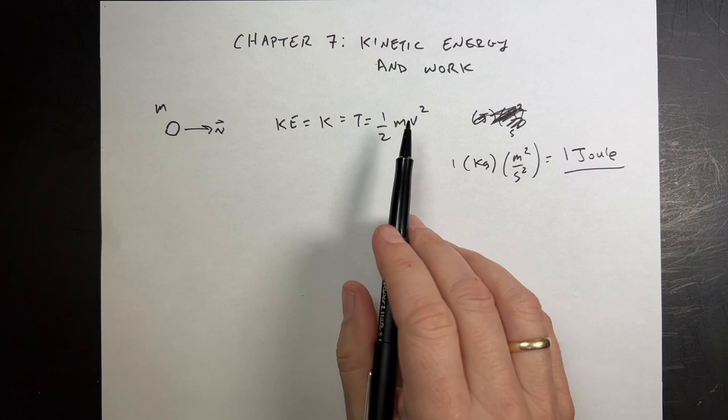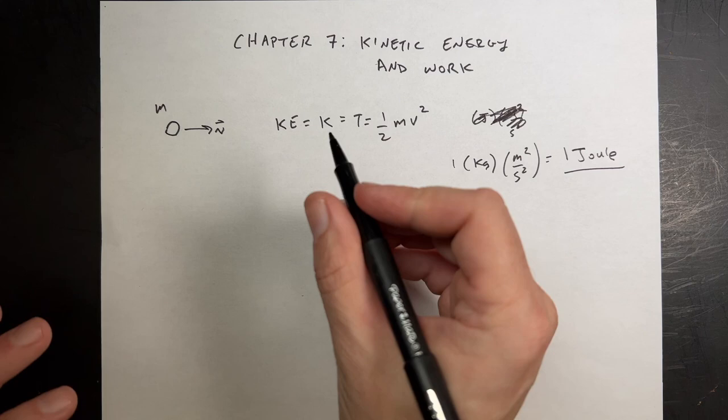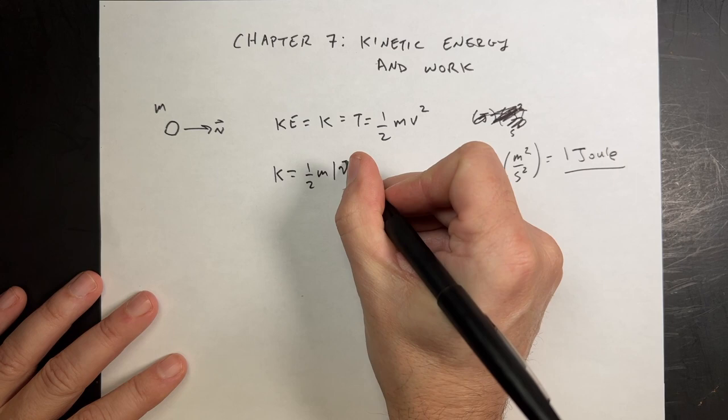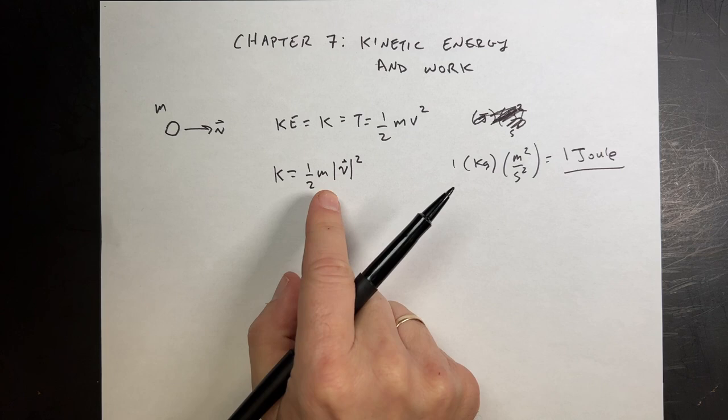Velocity is a vector, so you might want to write kinetic energy K as one half M times the magnitude of V squared. Work and energy are both scalar values — they do not have a direction. Kinetic energy doesn't tell you which way you're moving; it's just a property based on both the mass and the speed.